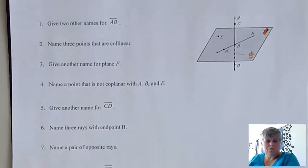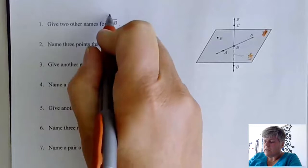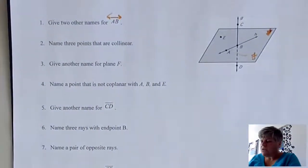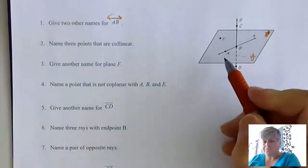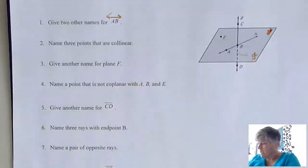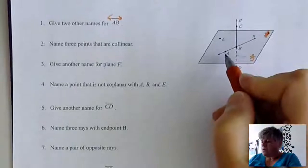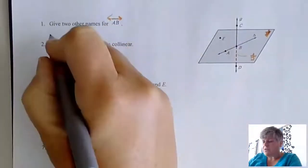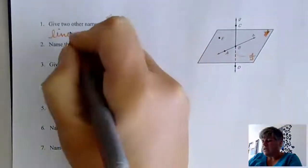So the first question says give two other names for line AB. And you can't see that that's a line thing, but it is. It's just really tiny. So we're saying two other names for line AB. Remember when we have a line, we can name it with capital letters or we can name it with one single lowercase. So the first thing I might say is line H.